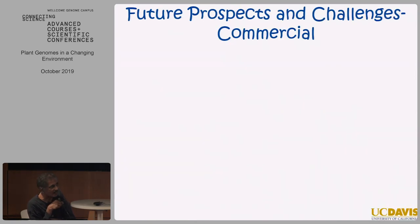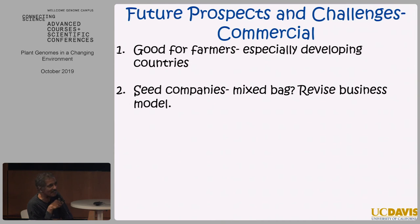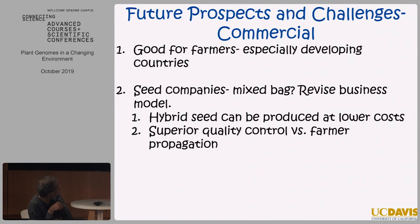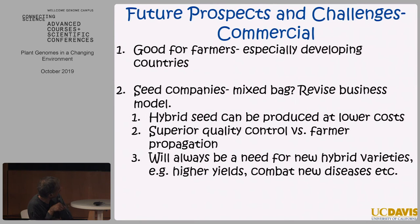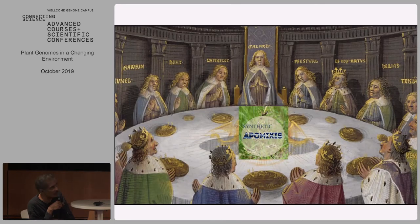The commercial challenges: this is good for farmers, especially in developing countries. For seed companies maybe not so good, but you can revise your business model — you can make hybrid seeds at lower costs with superior quality control, and there will always be a need for new hybrid varieties, including combating new diseases. There's also the usual problems with transgenic technology that we are working to get around. Unfortunately CRISPR-Cas9 is still needed, which is okay in the US but not in the EU — but that's a different matter. That ends the story of how we found the holy grail.